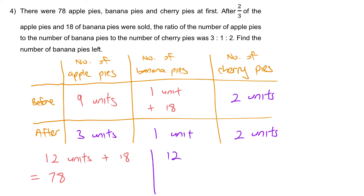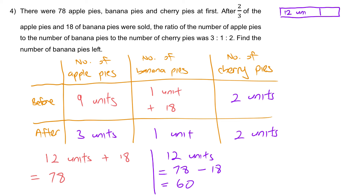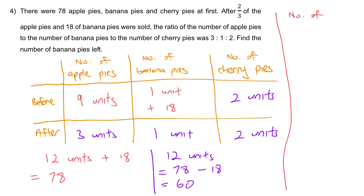So 12 units equals 78 minus 18, which is 60. Therefore 1 unit equals 60 divided by 12, which is 5. The number of banana pies left is 1 unit, which is 5.